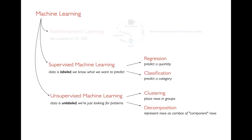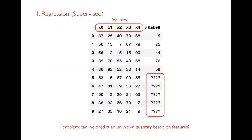In unsupervised learning, we might try to cluster data by placing rows into different groups. Or we might try to decompose our rows — maybe every row is a combination of two component rows, so there's some simplicity even though there are many columns. I'm going to go through these four types of problems to make it more concrete. Here I have a table — a regular data frame. I have a Y column, which is my label, generally what I'm trying to predict. Then I have columns X0 through X4 — those would usually have real names, like the number of beds in a house.